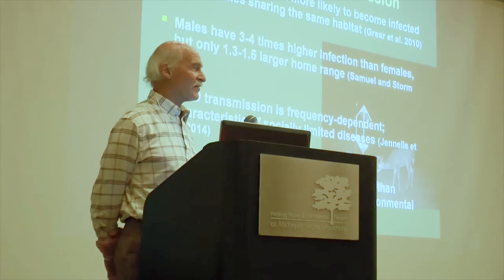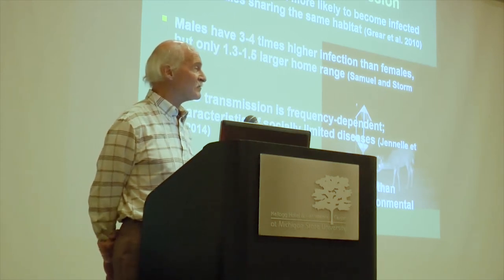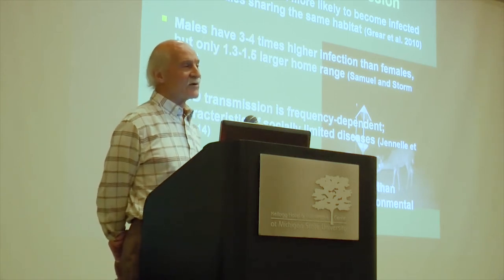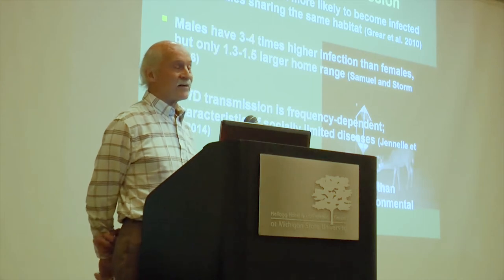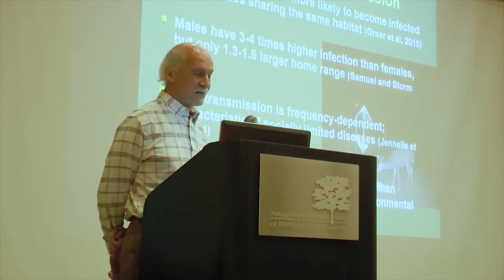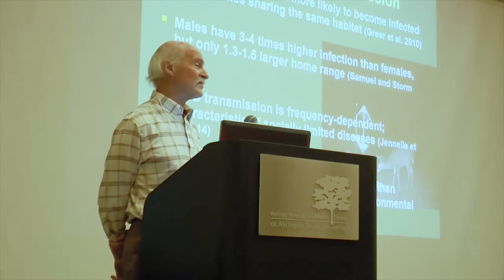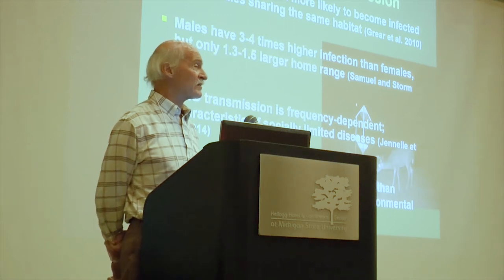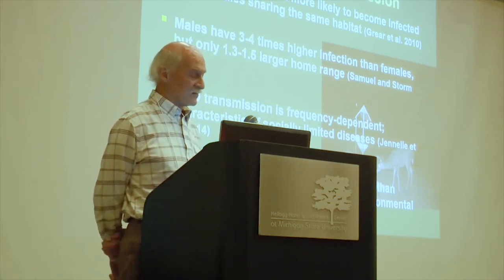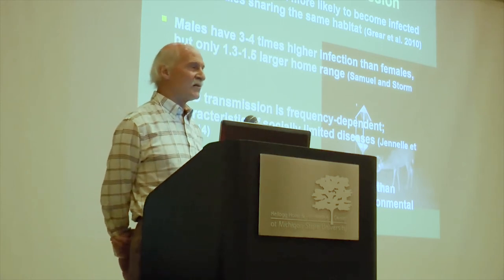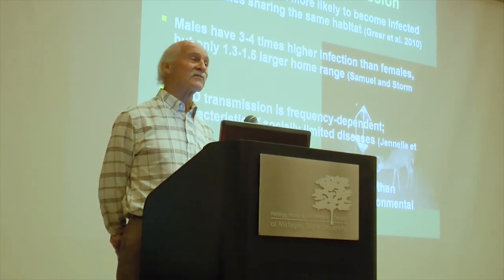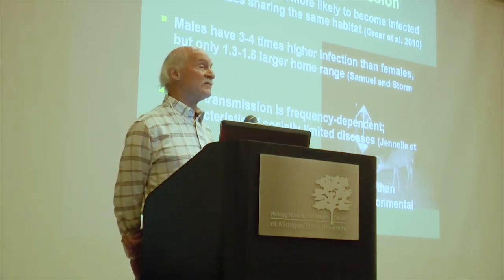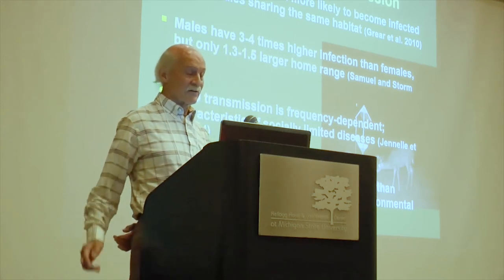One conundrum about direct contact transmission is fawns and young deer. There's no pair bond more highly interactive and social than a mother and its fawn, yet we see much lower rates of infection in young deer than in older deer. We don't see the high infection rates we might expect if does were transmitting to their fawns. At least one explanation might be that fawns have much less exposure to the environment than adult deer do, suggesting an environmental route factor.